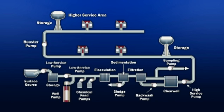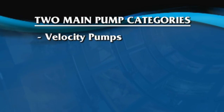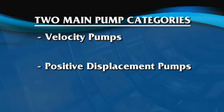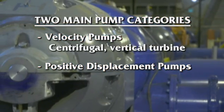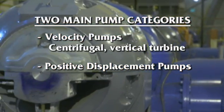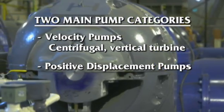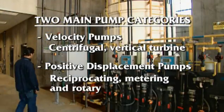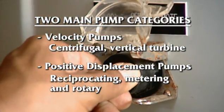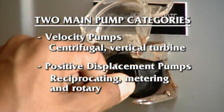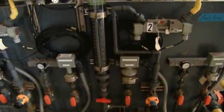The two main categories of pumps used in water supply are velocity pumps and positive displacement pumps. Velocity pumps, including centrifugal and vertical turbine, are used for most distribution system applications. Positive displacement pumps include reciprocating and rotary, and are used for moving abrasive or harmful materials and metering chemical feed systems.